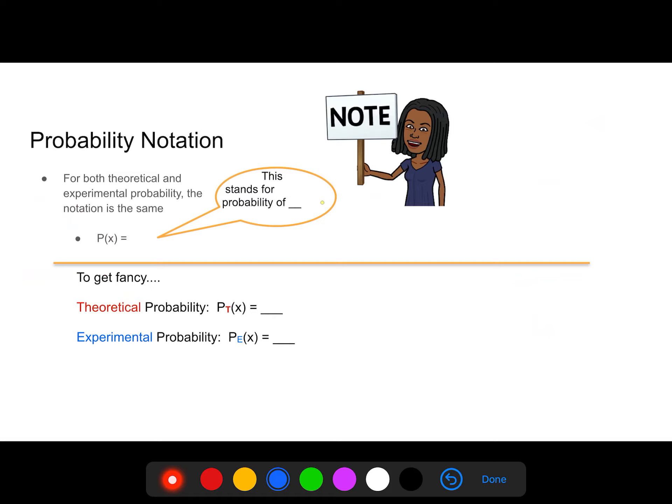So the probability notation, write this down. It's the same, the P of X. But we can get real fancy. We can do a P and a little subscript T. Subscript is being that little tiny T on the bottom for theoretical probability. Experimental would be the P_E of X. So pretty much, you're putting the first letter subscripted down. Make a note of that, please.